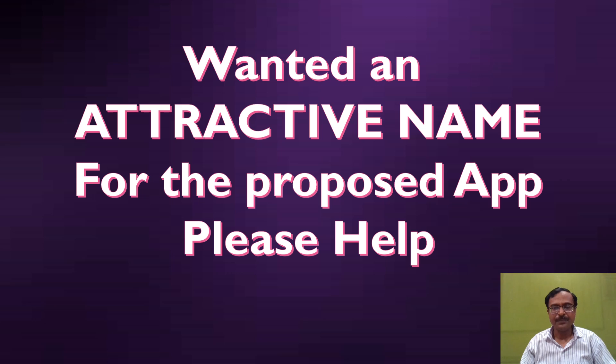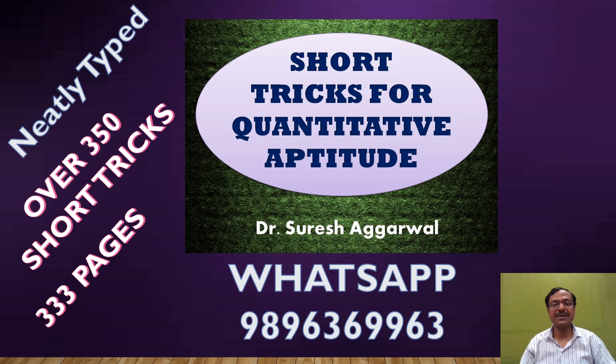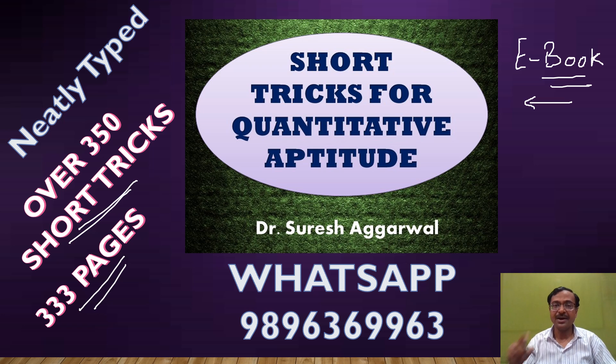There's a very good announcement - the channel is going to come up with its own app. As a family of this channel, we want all of you to suggest an attractive name for the upcoming app. If we select your suggested name, you will win this Short Tricks for Quantitative Aptitude ebook, an exclusive collection of over 350 short tricks neatly typed in 333 pages. It's already creating a wave in the market and is going to be the best seller over the years.